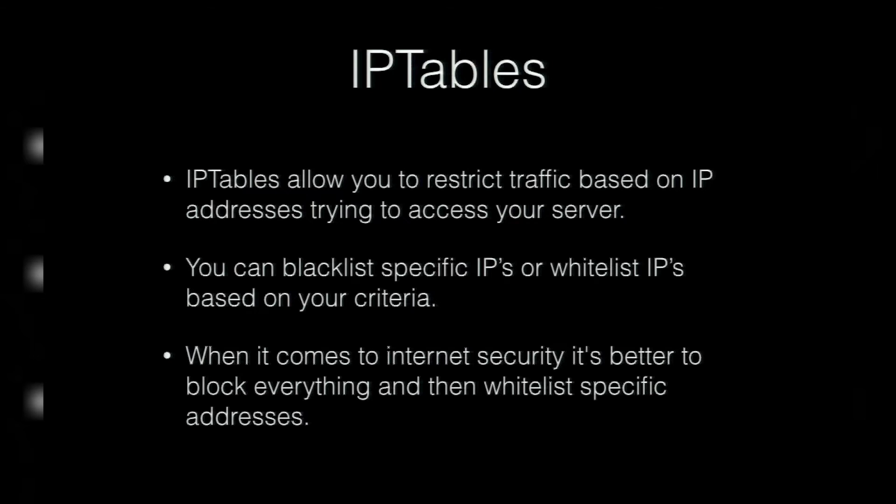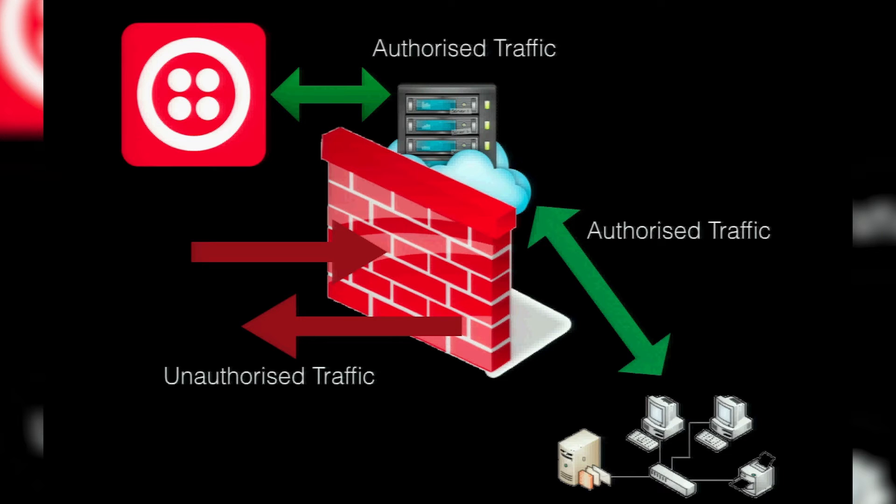The first thing I'm going to talk about is IP tables. IP tables are the basis of most Linux firewalls. They allow you to restrict traffic based on IP addresses — you can whitelist traffic, you can blacklist traffic, you can even allow all traffic but only to port 80 or port 443. You can do combinations of all three. I've always found it's better to block everything and allow specific subsets of information in as you need it.